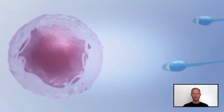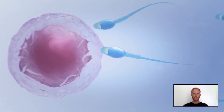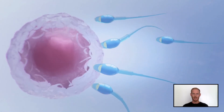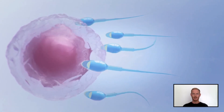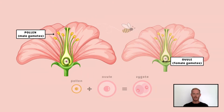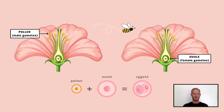In our last lesson, we learned about sexual reproduction, which involves the production, coming together, and fusion of gametes, otherwise known as sex cells. In flowering plants, male gametes are present in pollen grains, and female gametes in ovules. Pollen is transferred from the male parts of the flower to the female reproductive organs in a process called pollination. The nuclei of the male and female sex cells can then fuse together to form a zygote, which develops into a seed.